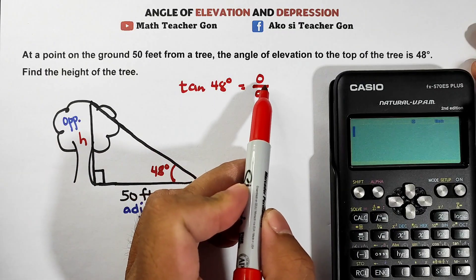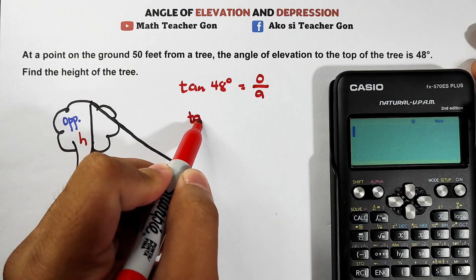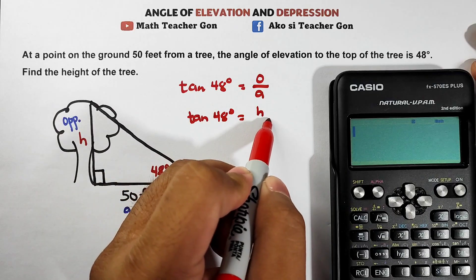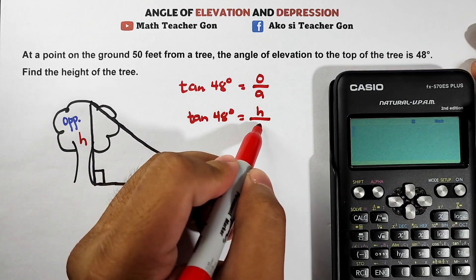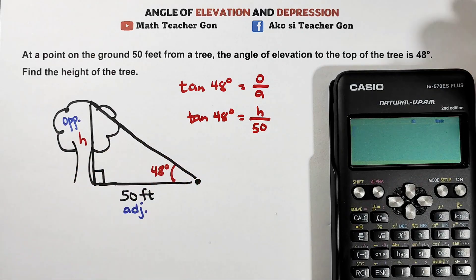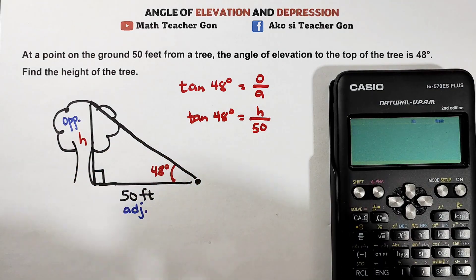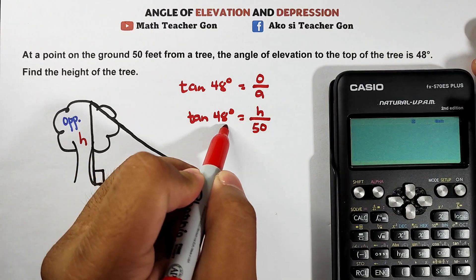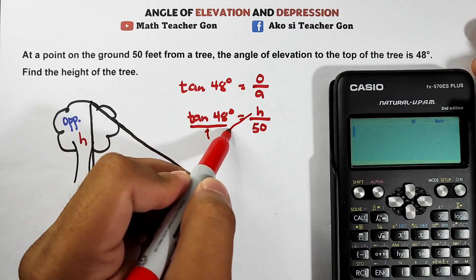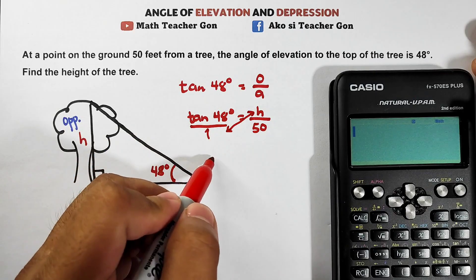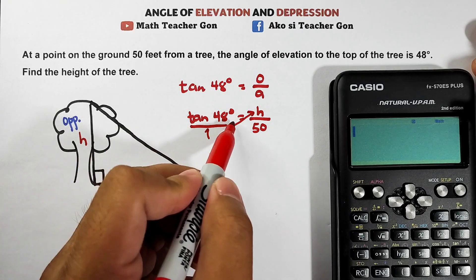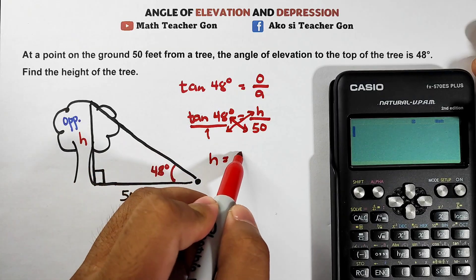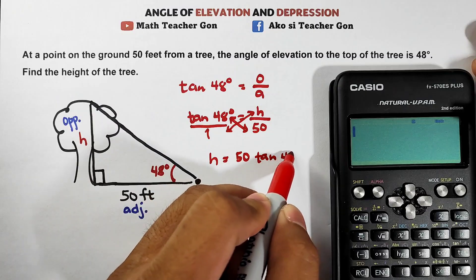Tangent 48 degrees equals your opposite side over the adjacent side. We're looking for the opposite. So that is tangent 48 degrees equals h, because that's our opposite side, over your adjacent side which is 50 or 50 feet. Now what's the situation here? Simple, you will cross multiply. 1 times h is h equals this 1. Multiply this too: tangent 48 degrees and 50, that is 50 tangent 48 degrees.